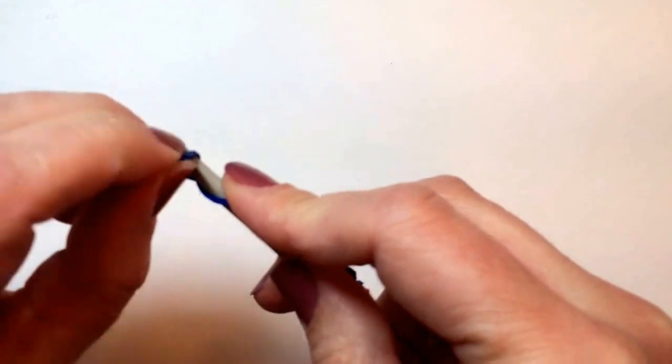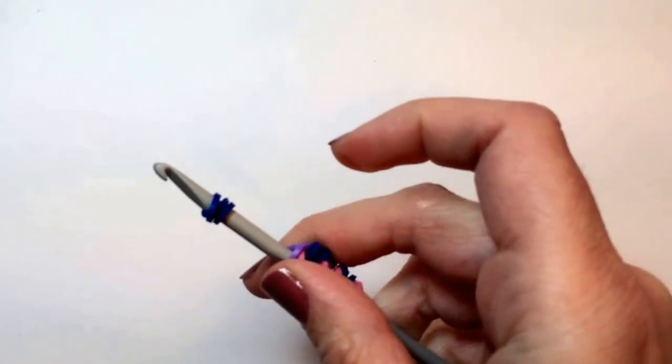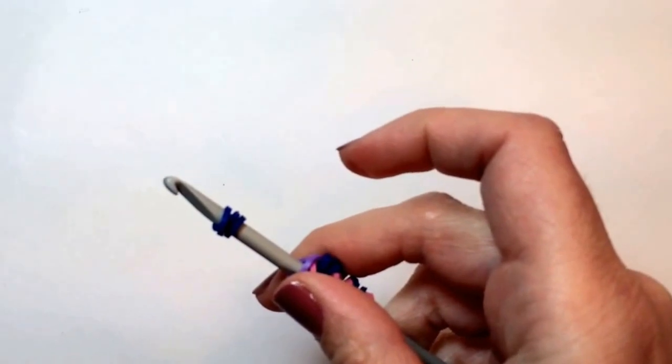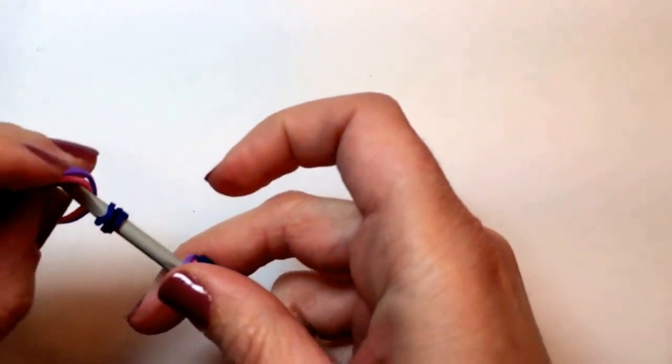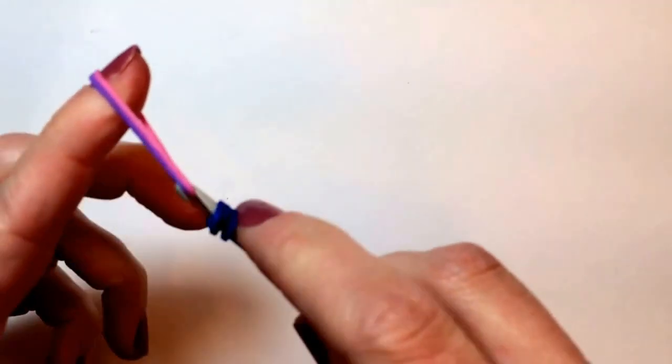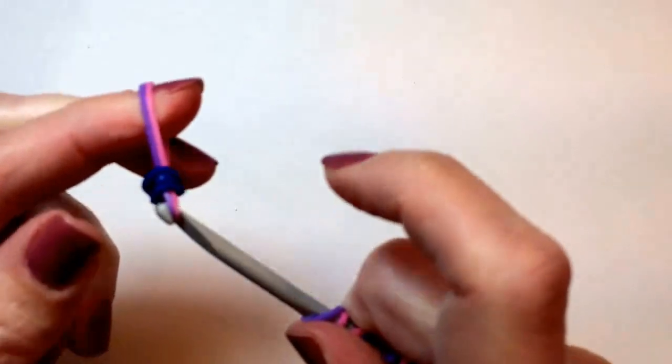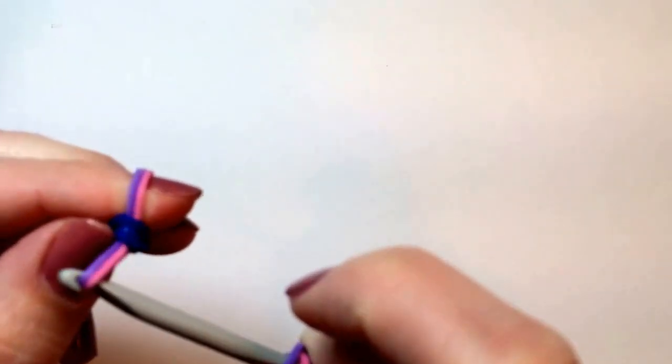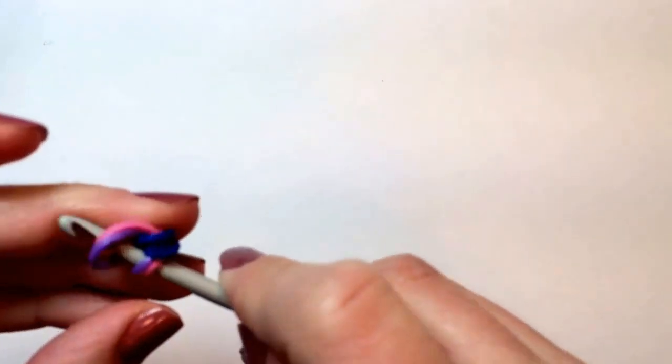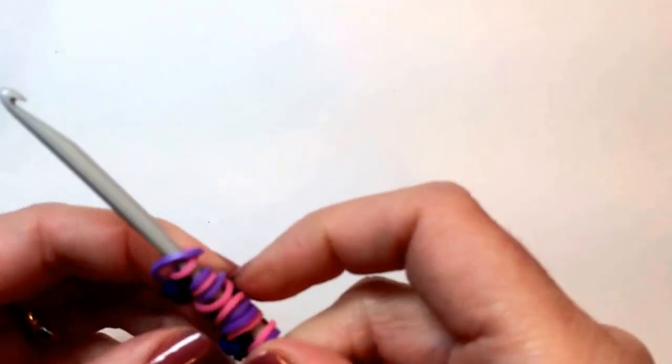Wrap around three times. One, two, three. Get your two other rubber bands. Pull tight. Push to the center. There you go. Three wings.